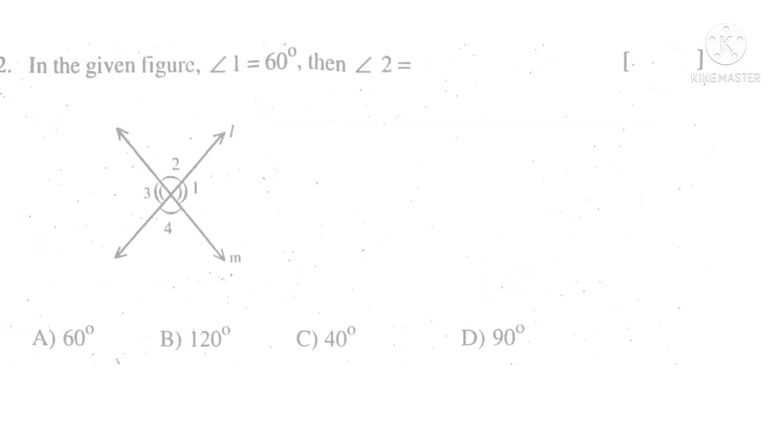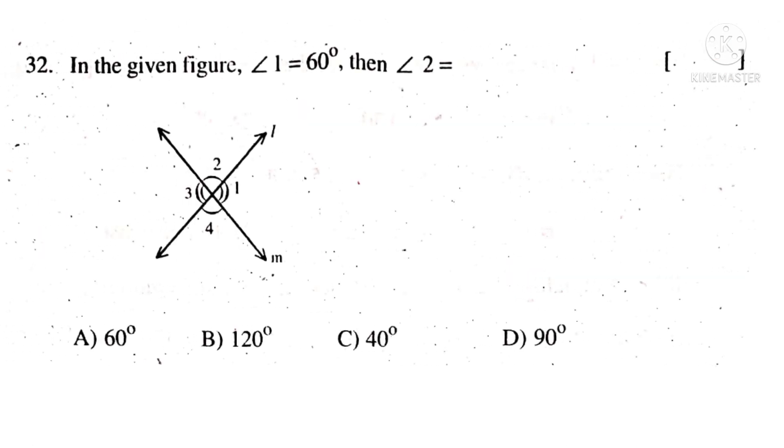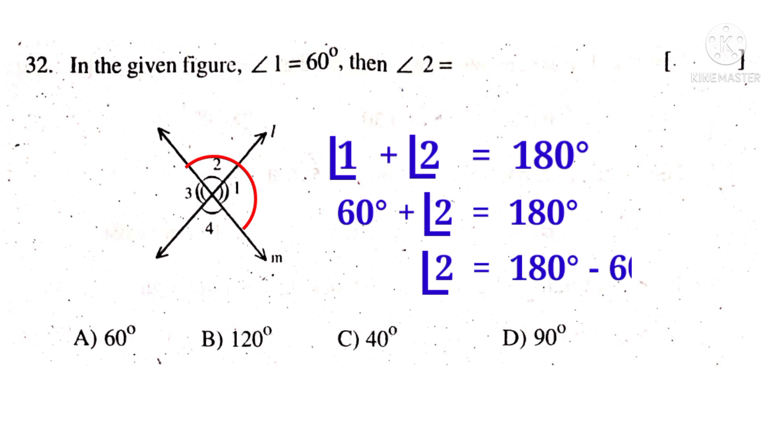Now 32nd bit. In the given figure, angle 1 is 60 degrees and angle 2 is how much? Observe that angle 1 and angle 2 both lie on the same line M. So sum of these angles is equal to 180 degrees. So 60 plus angle 2 is equal to 180 degrees. Now angle 2 is equal to 180 degrees minus 60 degrees which gives 120 degrees. So the correct choice is B.